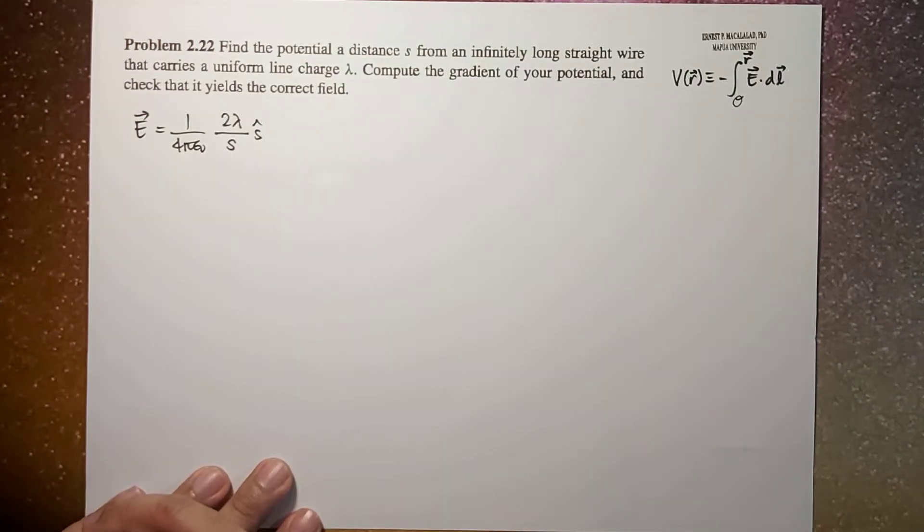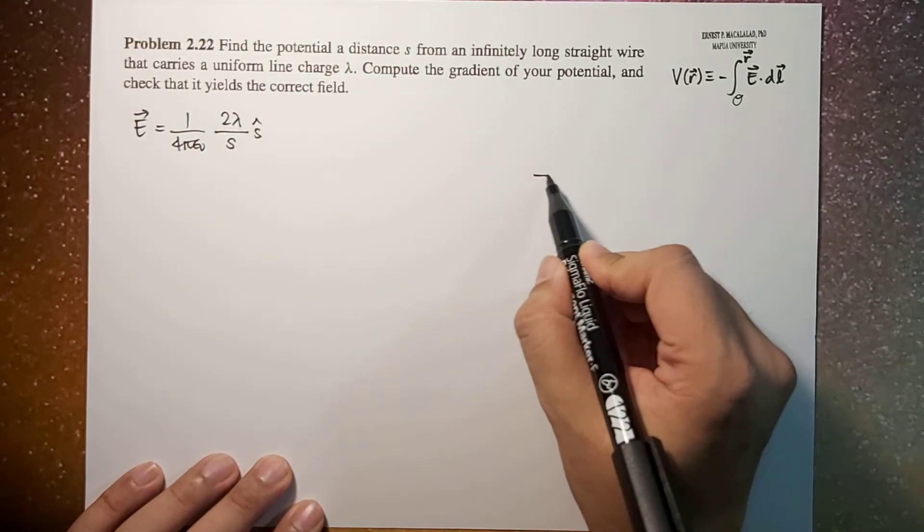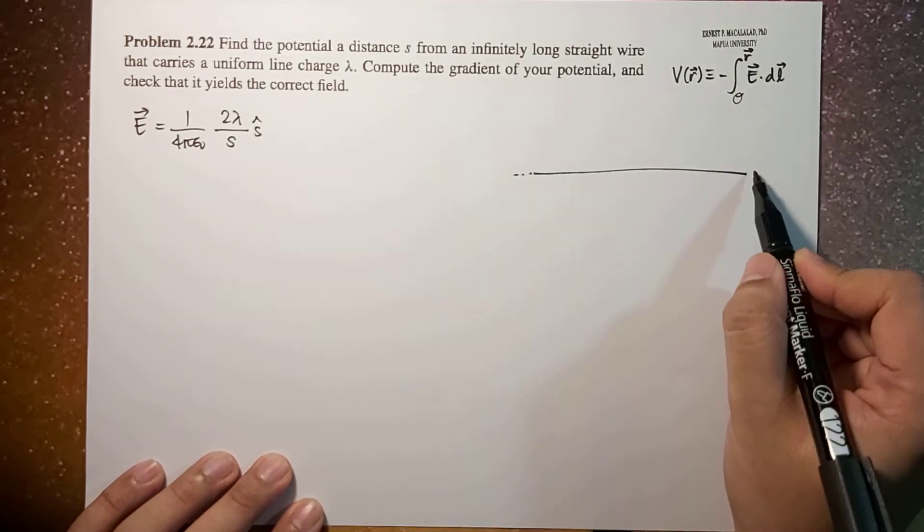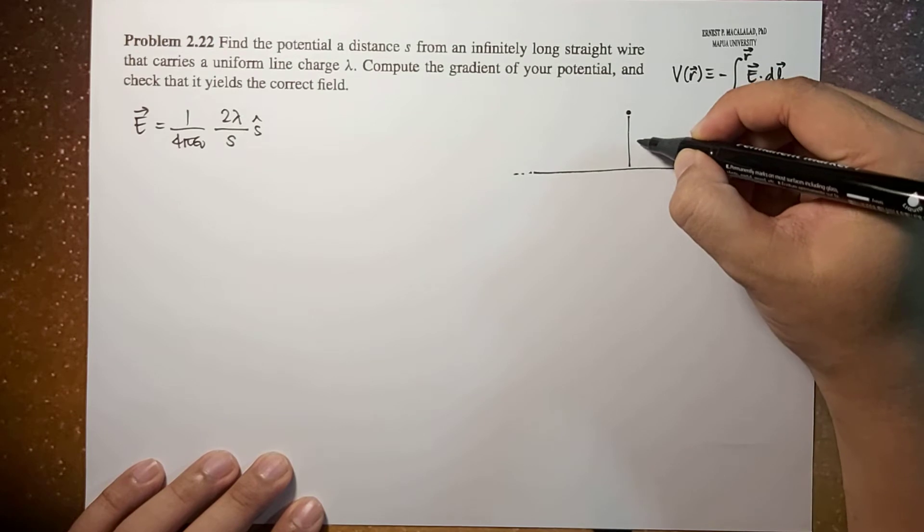Lambda is the uniform line charge density and if this is your line charge that is infinitely long, this is your s.